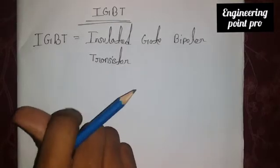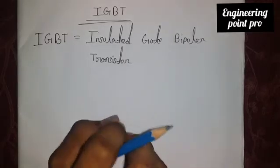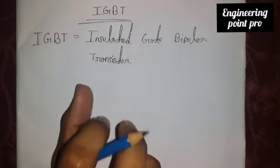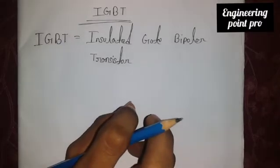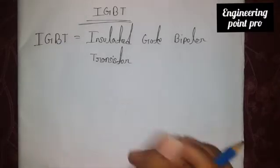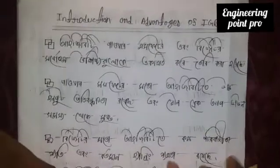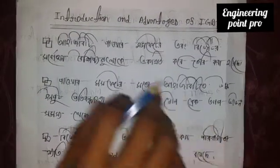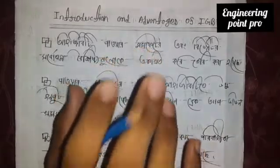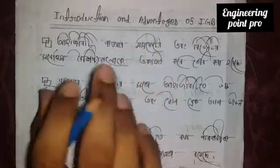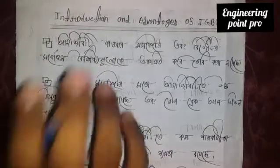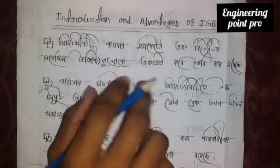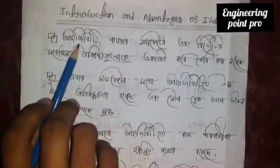Power Electronics Most Important Active Device: IGBT. IGBT is the Insulated Gate Bipolar Transistor. Let me know about the Introduction and Advantages of IGBT. IGBT was introduced in power electronics. Power MOSFET and BJT combined with the use of IGBT.